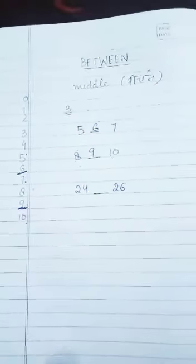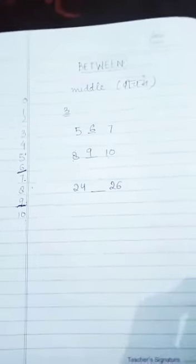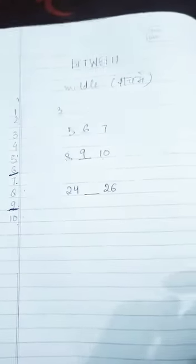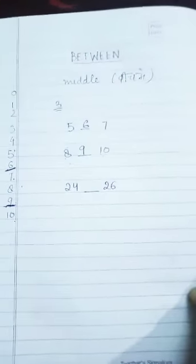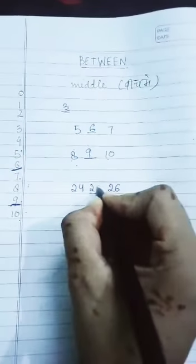Because it is twenty-four, then twenty-five, then twenty-six. Hame pata chala ki twenty-four aur twenty-six ke beech mein jo number hai, woh hai twenty-five. Counting karte samay. So we will write here twenty-five.